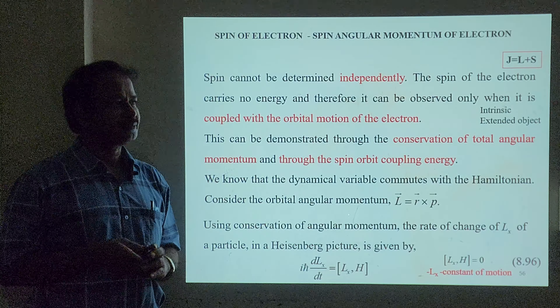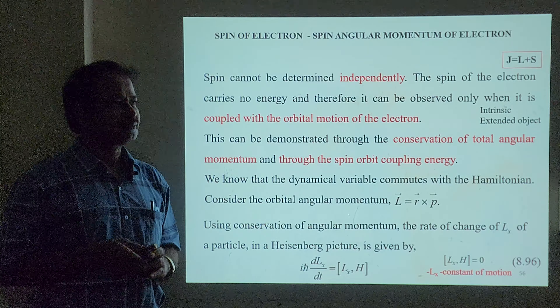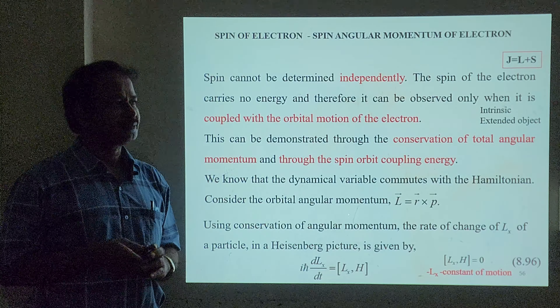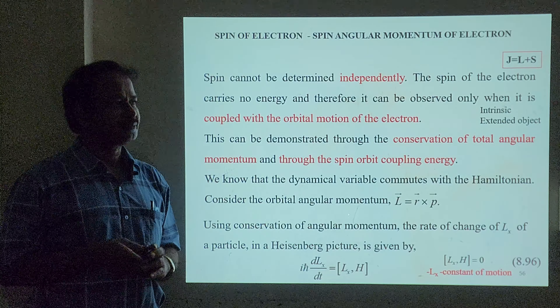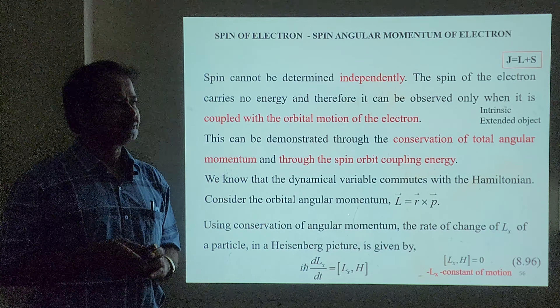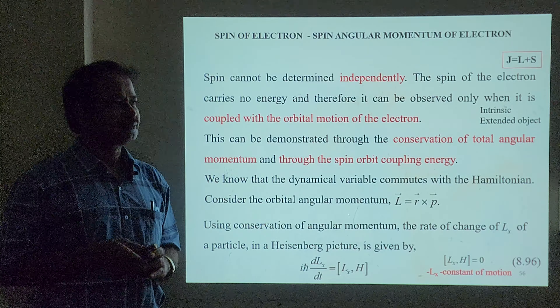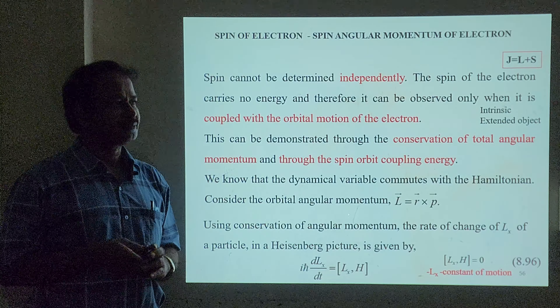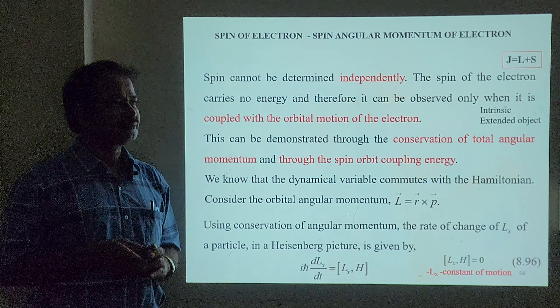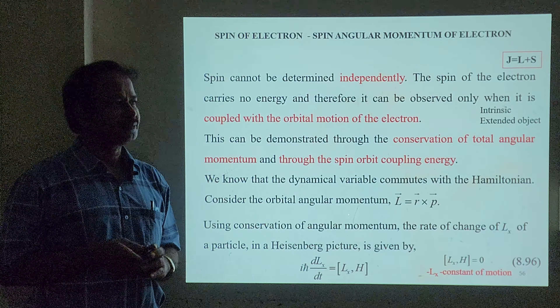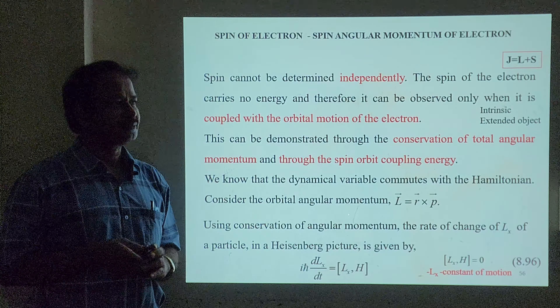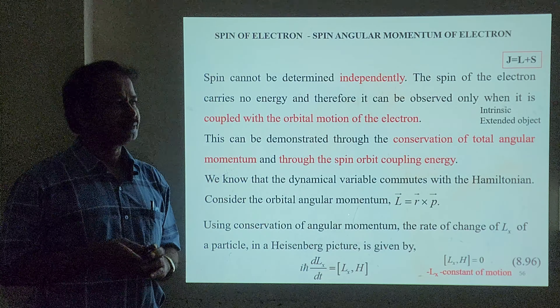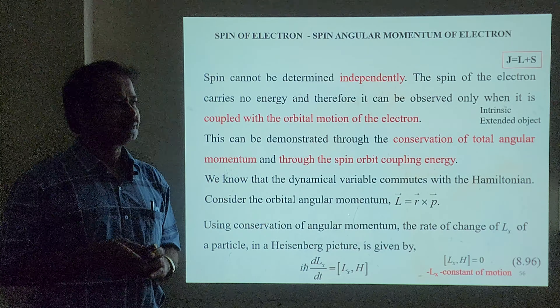We are going to deal with conservation of total angular momentum through the equation of motion. We take the equation of motion from the Heisenberg picture, which we studied in quantum mechanics 1. Any dynamical variable commutes with the Hamiltonian if it is a constant of motion. Here we take the dynamical variable as L, and we check whether L commutes with the Hamiltonian or not.